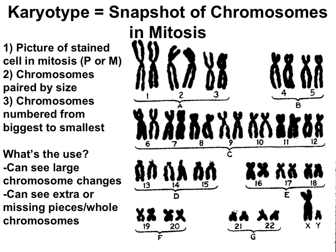The easiest time to see chromosomes is during late prophase or metaphase, when the DNA is condensed and ready to move. Scientists can take a chromosome picture called a karyotype. After taking a picture of the chromosomes, a scientist would sort the chromosomes based on their size. The largest chromosomes get the lowest numbers — chromosome 1 is the biggest, down to chromosome 22. There are also two sex chromosomes; in this case X and Y, meaning this karyotype is from a male. There are 23 pairs, or 46 total chromosomes.